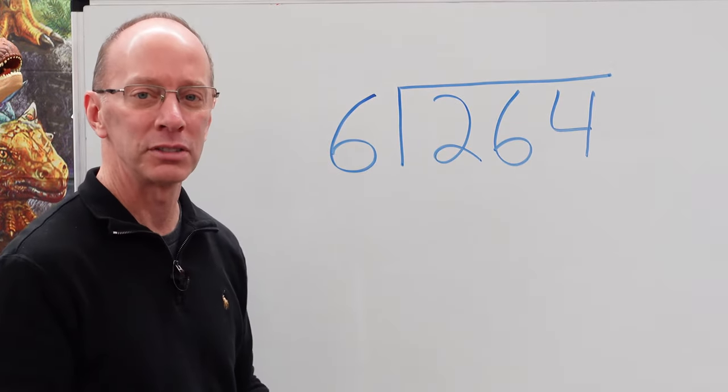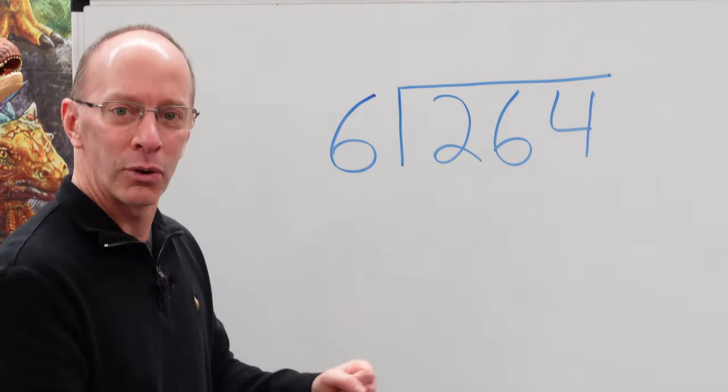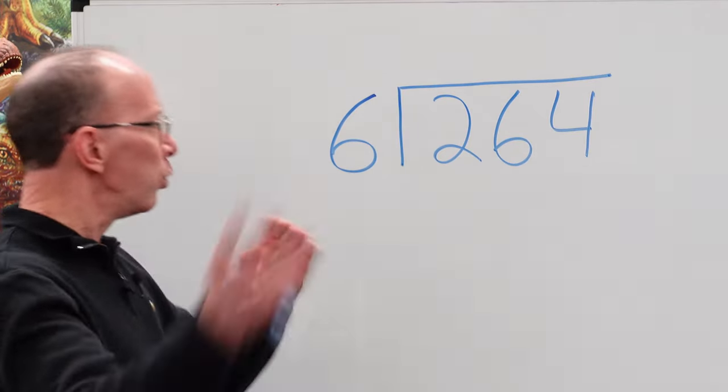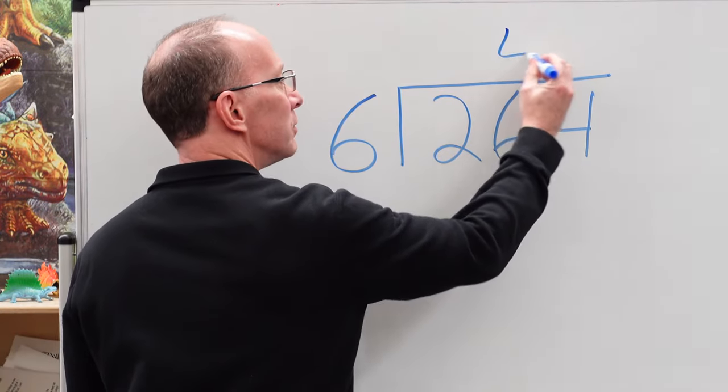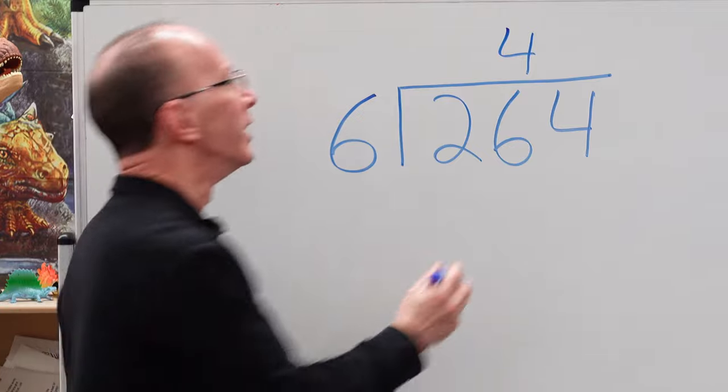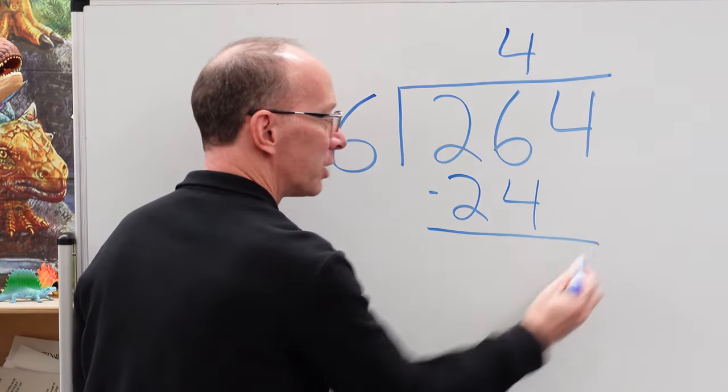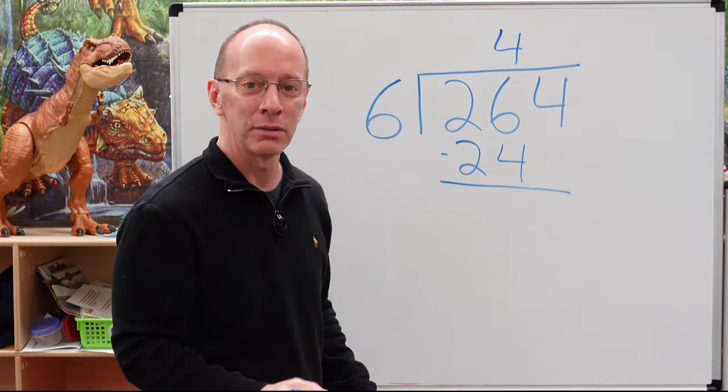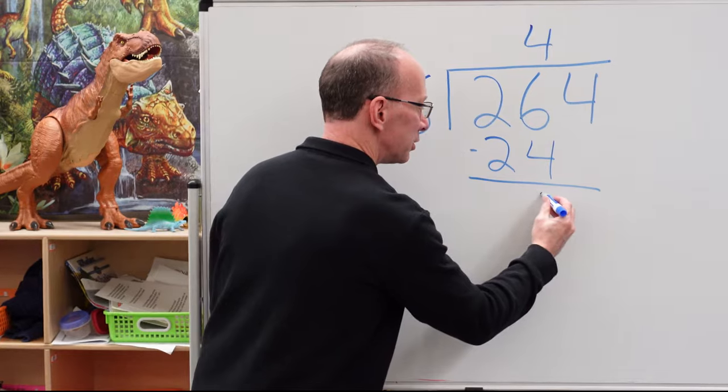So six times what equals 26? Six times two is 12. Six times three is 18. Six times four is 24. Six times five is 30. Six times four. Four times six, 24. And we're going to use subtraction. Six minus four, two. Uno dos. So we put two right here.